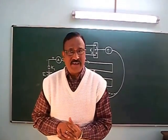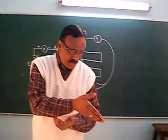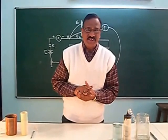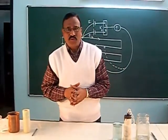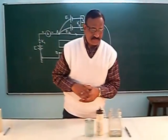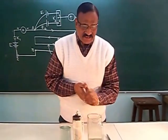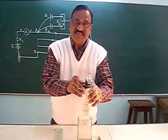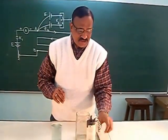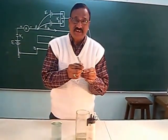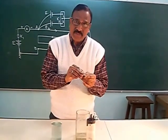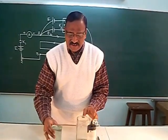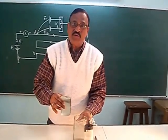Today we will compare the EMF of two cells: the Leclanche cell and the Daniel cell. First, let us find out how to form a Leclanche cell. The Leclanche cell has a glass container, a sealed porous pot, and an amalgamated zinc electrode to prevent local action. The electrolyte is ammonium chloride.